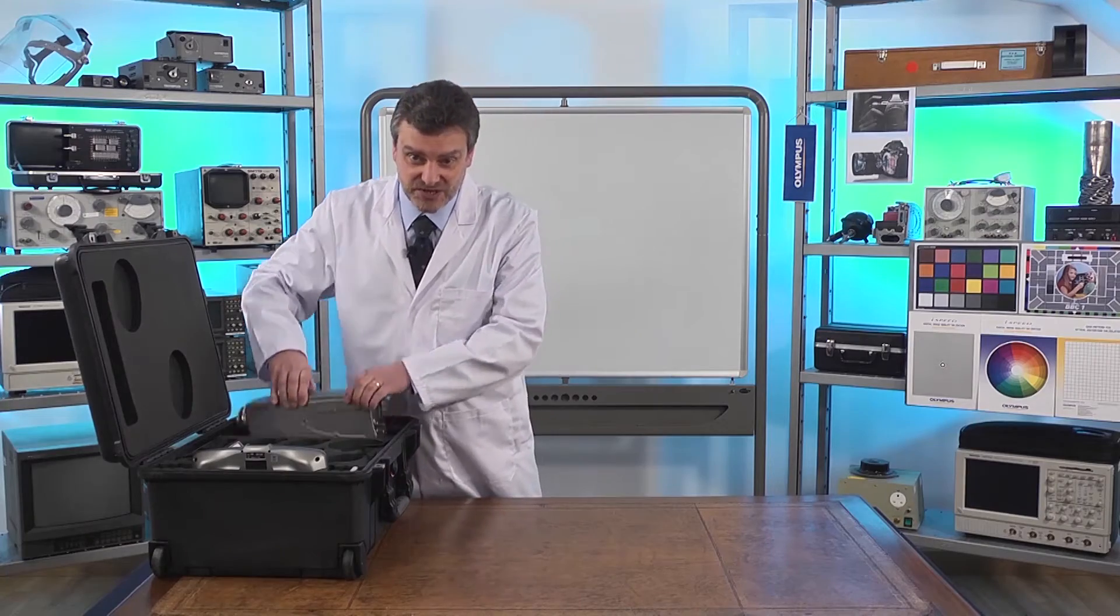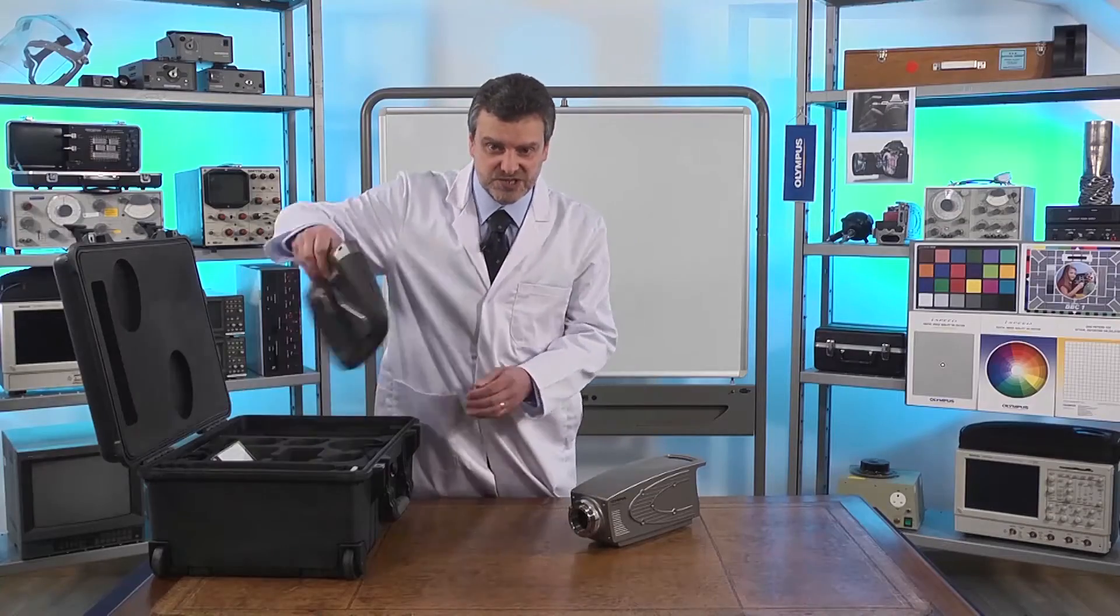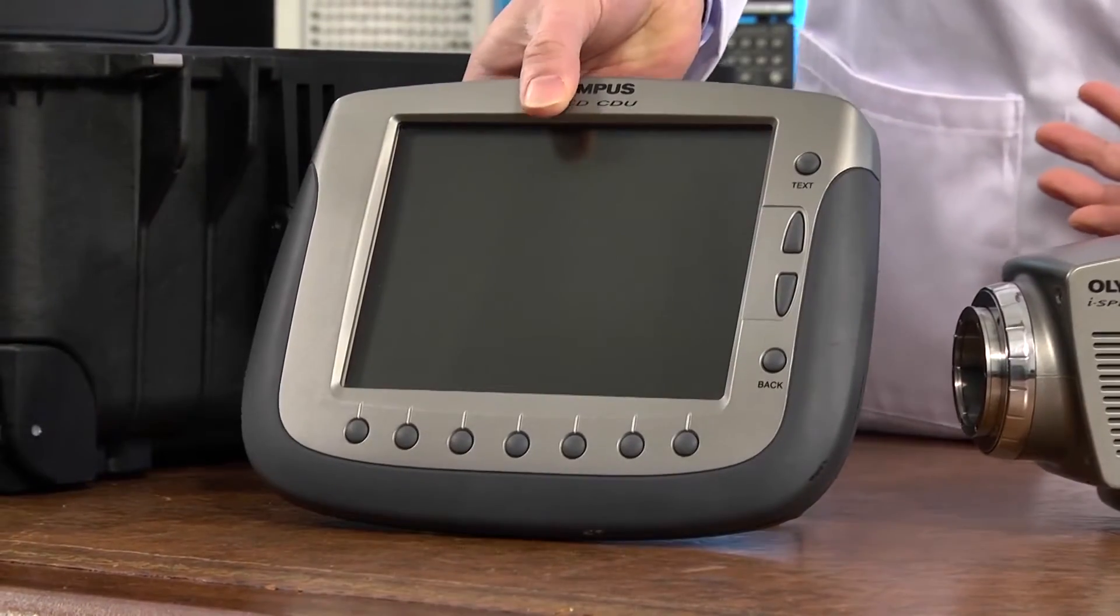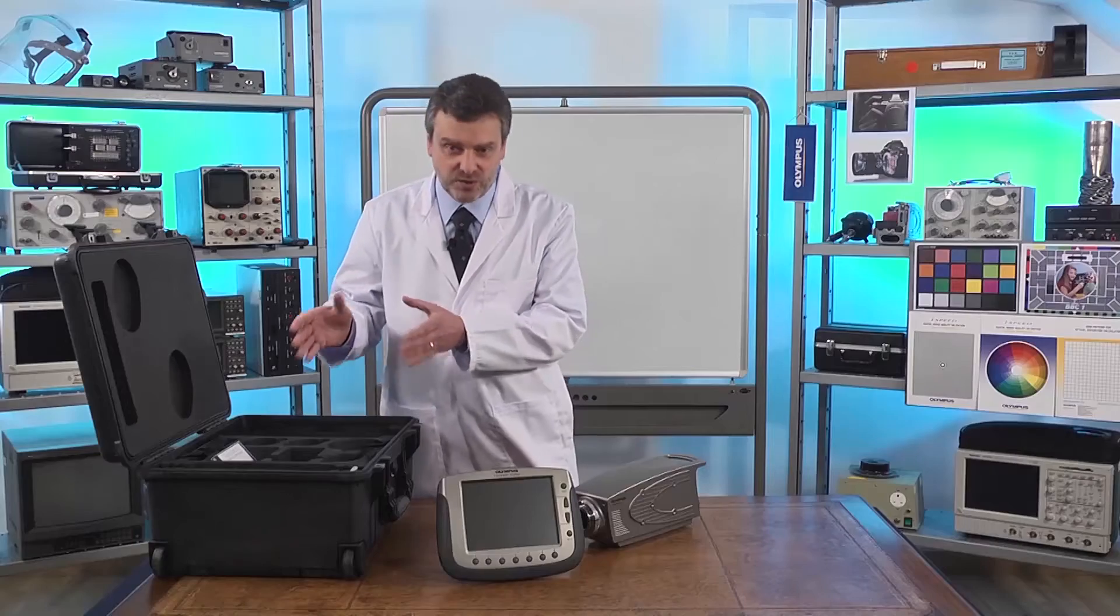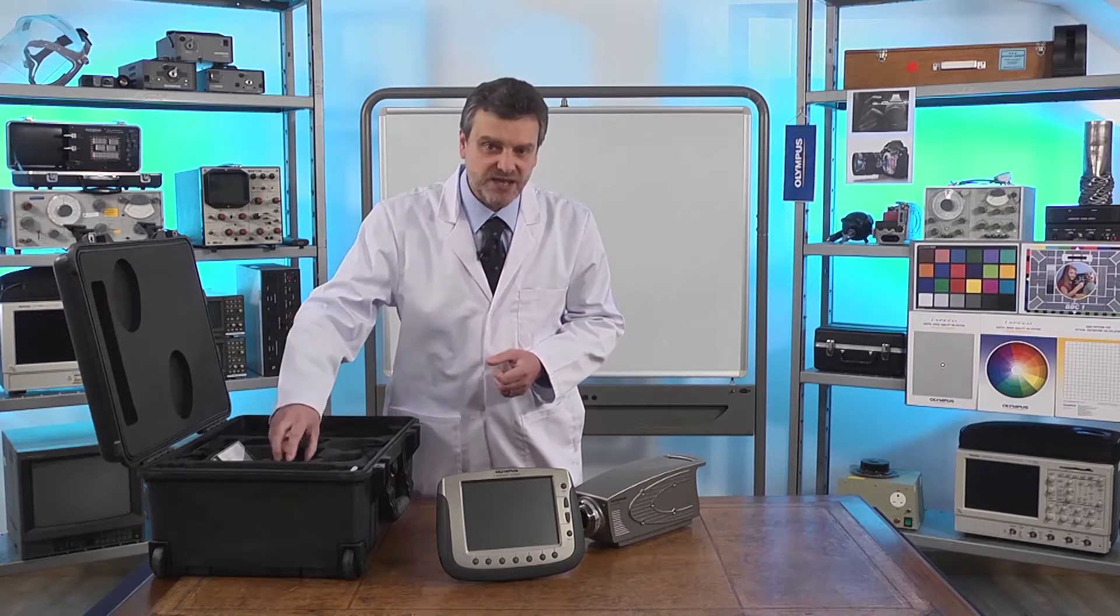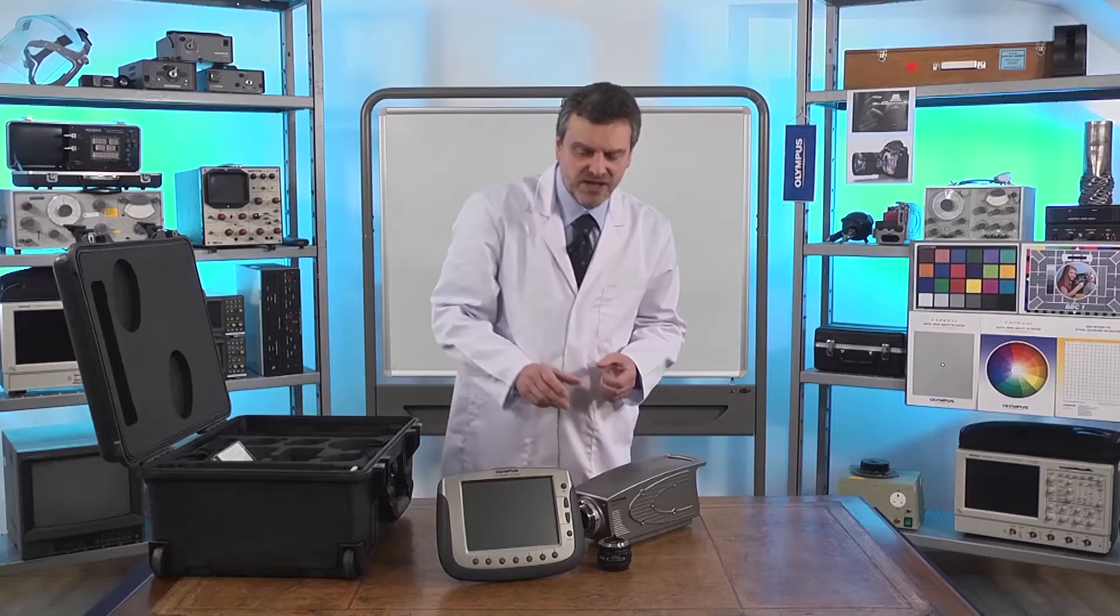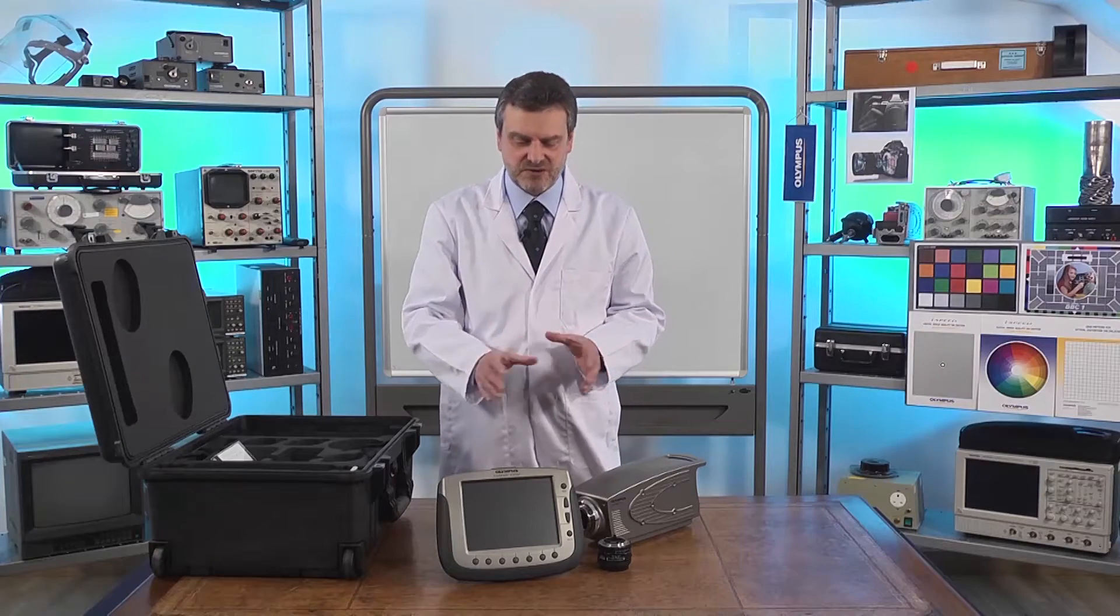Inside the case you'll receive your Olympus iSpeed 3 camera, your controller display unit, all the cables and the power supply that you'll need to take high speed video, and there's a space for your lenses. Everything you need to take high speed video is right here.